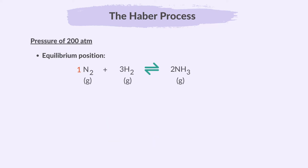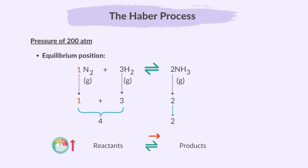Now look carefully at the balanced equation of the Haber process. On the reactant side we have one mole of nitrogen gas and three moles of hydrogen gas, totalling four moles of gas. On the product side we have two moles of ammonia gas. If the pressure is increased, since there are more gas molecules on the reactant side than the product side, the equilibrium shifts to the side with fewer gas molecules. Therefore, increasing the pressure causes the equilibrium to shift to the right, favoring the formation of ammonia.